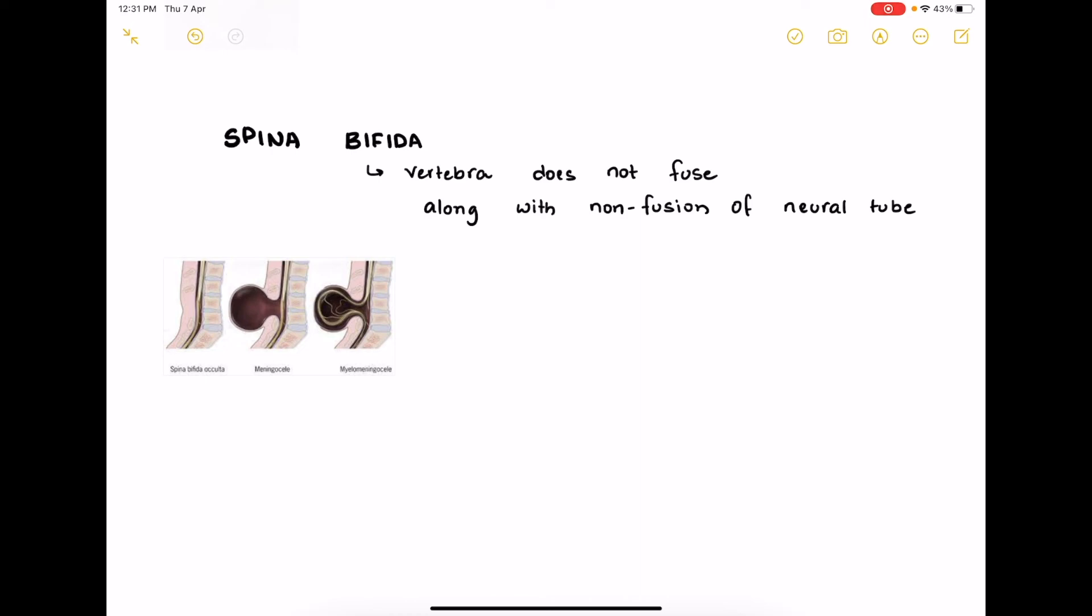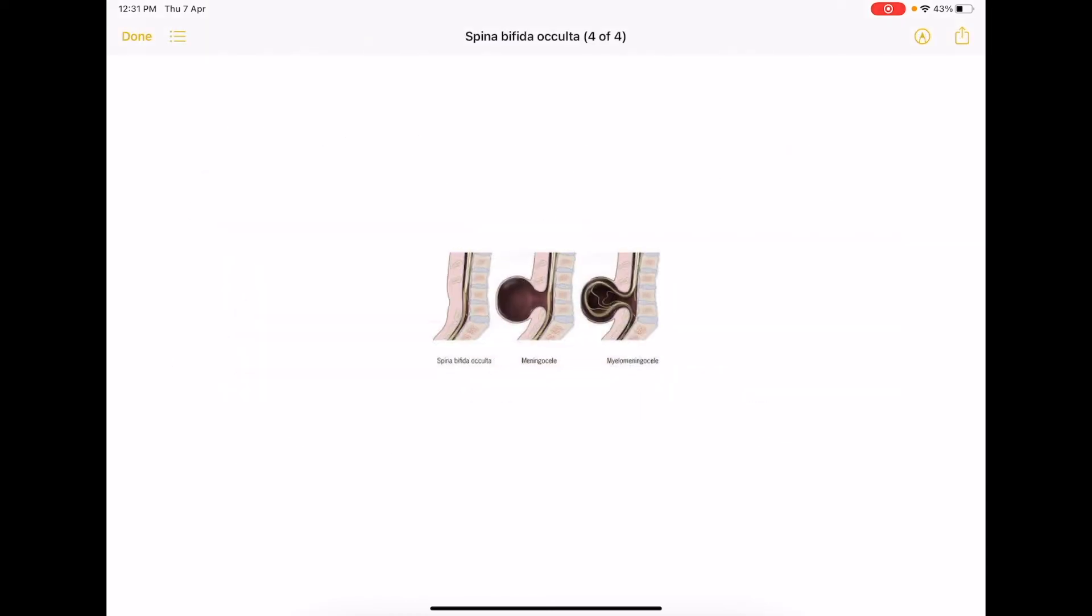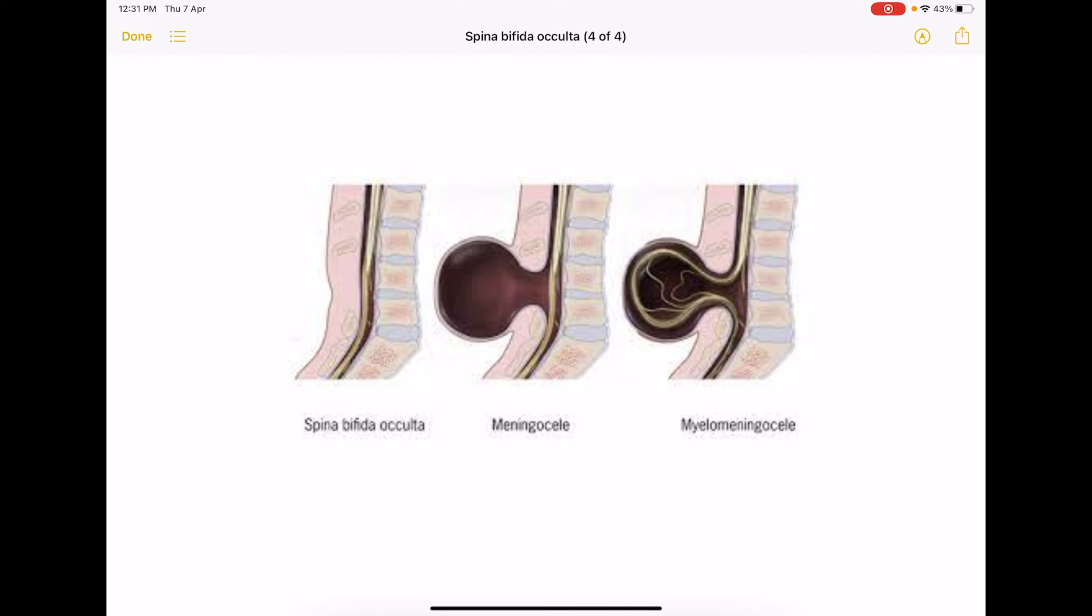You have types of spina bifida. It could be spina bifida occulta where nothing is seen externally although the vertebra is not fused but nothing is seen externally. Maybe sometimes there could be tuft of hair seen on the skin on the outside and it's usually an incidental finding.